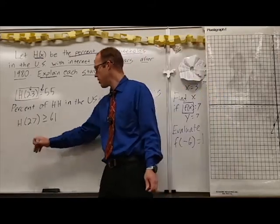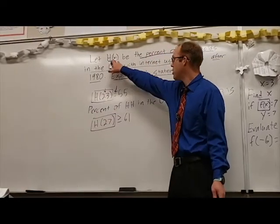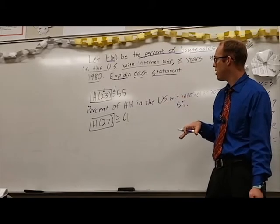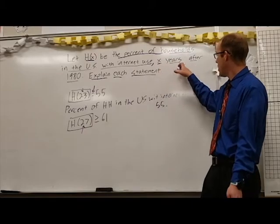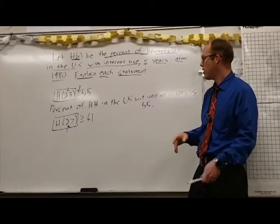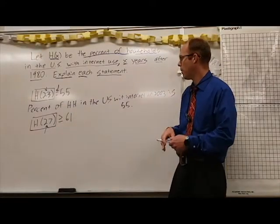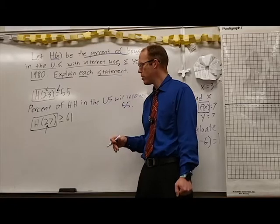Let's introduce the second one here, h of 27. That's h of x again, talking again about the percent of households in the United States with internet use. The 27 means 27 years after 1980. So this again is talking or is essentially the same as this phrase right here. 27 years after 1980, that would be 2007.